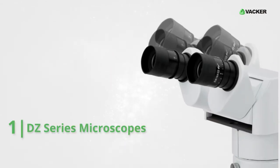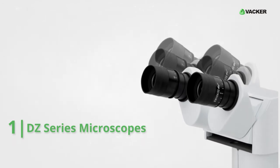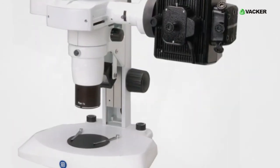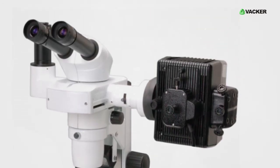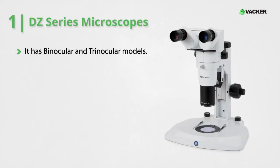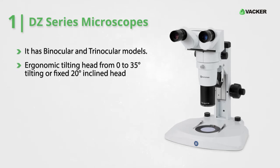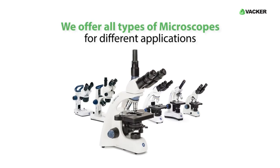Number one: DZ-Series Microscopes. The modular stereo microscopes of the DZ-Series combine ergonomics with very high resolution optics. Six standard configurations are available for magnifications from 8 to 80 times. Features include binocular and trinocular models, an ergonomic tilting head from 0 to 35 degrees, tilting or fixed 20-degree inclined head, and transmitted and incident 3-watt LED illumination.